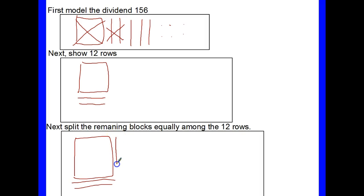Now, that leaves me with the three longs and six units that I'm going to place equally among the 12 rows. So, I'm going to place them here. One, two, three. And then I have the six units. One, two, three, four, five, six.